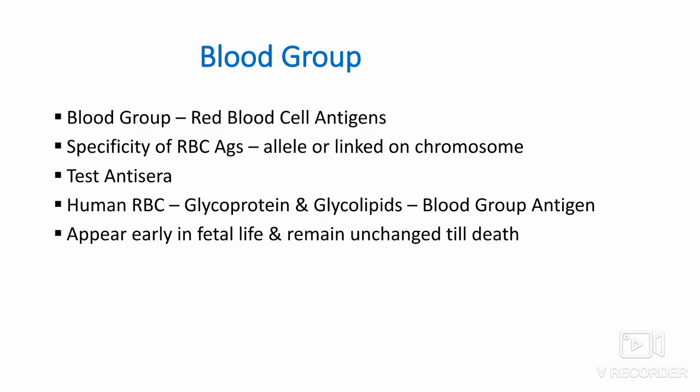Now we shall learn about the basics of blood groups. The term blood group refers to the entire blood group system comprising red blood cell antigens. The specificity of RBC antigens is controlled by different genes, which may be allelic or closely linked on the same chromosome. The blood type refers to a specific pattern of reaction to test antisera within a given system. Human RBCs possess on their surface a series of glycoproteins and glycolipids which carry blood group antigens. Development of these antigens is genetically controlled, inherited, appears early in fetal life, and remains unchanged till death.